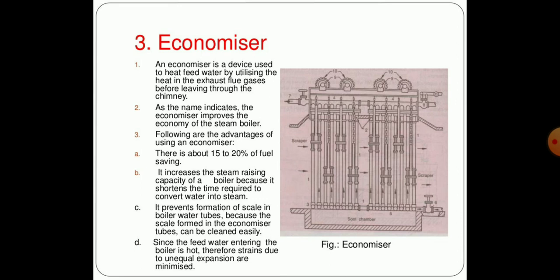Now economizer is another important accessory of the boiler. Economizer is a device used to heat the feed water by utilizing the heat in the exhaust flue gases before leaving the chimney. As the name indicates, the economizer improves the economy of the steam boiler. It has the advantage that waste flue gases are used to heat the water again. It increases the steam raising capacity of the boiler because it shortens the time required to convert water into steam. Also it prevents the formation of scale in the boiler walls. Any scale formed in the economizer tubes can be cleaned easily.